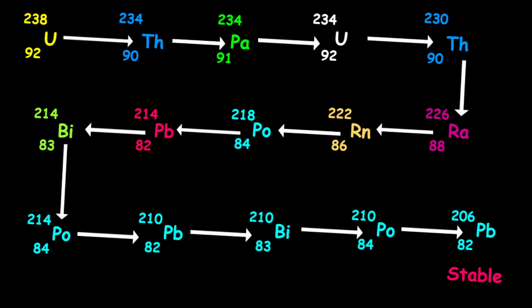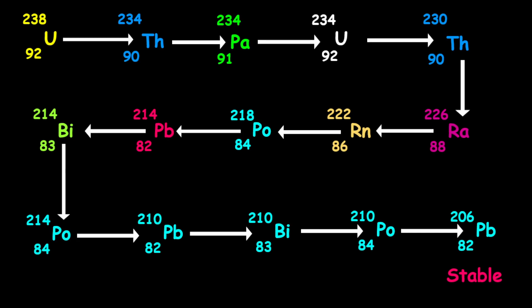To start, let's look at the entire decay series starting with unstable uranium-238 and ending with stable lead-206. Remember that this decay series only includes alpha and beta decays. If you see the mass number decreasing by 4 while the proton number decreases by 2, that is an alpha decay. If the mass number remains the same while the proton number increases by 1, that is a beta decay.